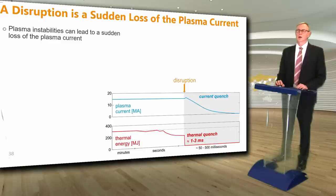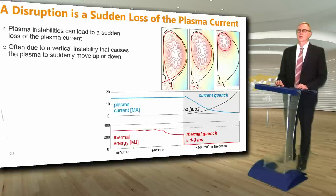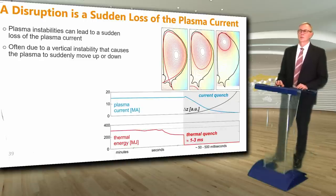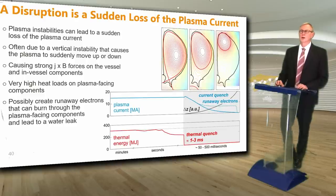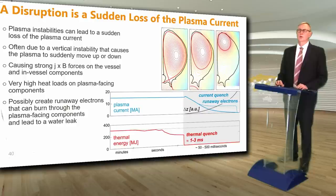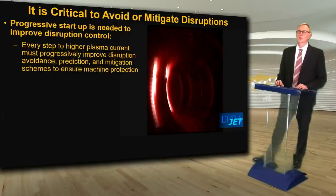A disruption is a sudden loss of the plasma current. Plasma instabilities can lead to a disruption where the plasma thermal energy is lost in a few milliseconds and the plasma current is lost in less than half a second. Disruptions are often due to a vertical instability that causes the plasma to suddenly move up or down and touch the walls of the machine, causing strong electromagnetic J×B forces on the vessel and in-vessel components, very high heat loads on plasma facing components, and can possibly create an intense beam of very high energy runaway electrons that can burn through plasma facing components and lead to a water leak inside the vessel. It is critical to avoid or mitigate disruptions, and every step to higher plasma current must progressively improve disruption avoidance, prediction, and mitigation schemes to ensure machine protection.